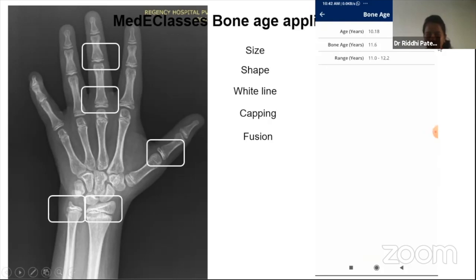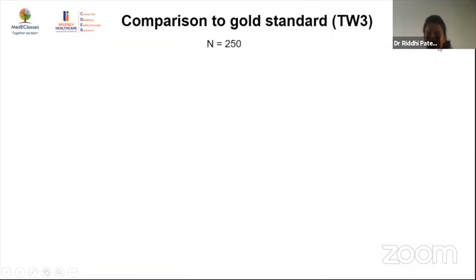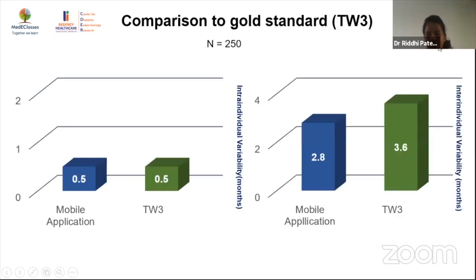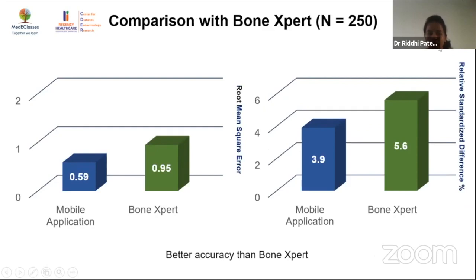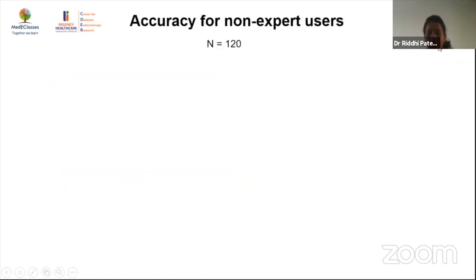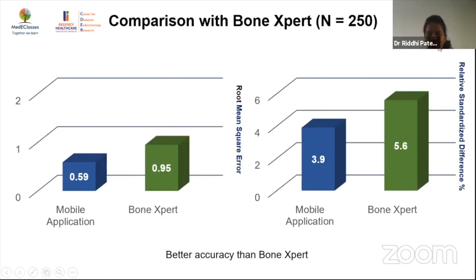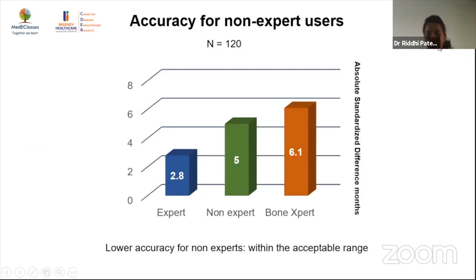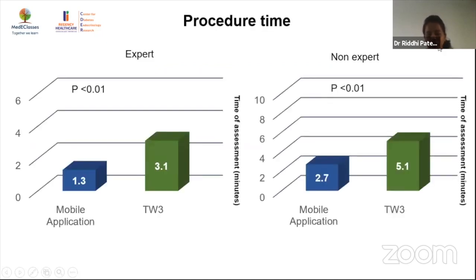Comparison of the mobile application against Tanner-Whitehouse 3 using 250 radiographs showed similar intra-individual and inter-individual variability to TW3 — comparable accuracy and precision. Against Bone Expert, the mobile application showed better accuracy with lower root mean square error and lower relative standardized difference. Even among non-expert users, the difference between the mobile application and TW3 was only five months — negligible and comparable to Bone Expert. Time for bone age assessment was reduced by approximately fifty percent for both expert and non-expert users.